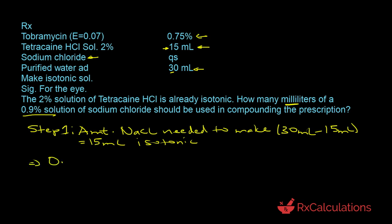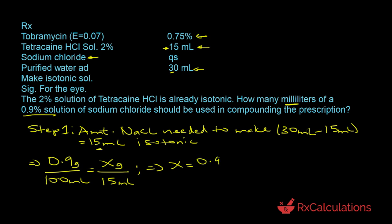Using a proportion based on normal saline — 0.9 grams of sodium chloride per 100 ml — we set this equal to x grams divided by 15 ml, the volume needing adjustment. Solving for x: x equals 0.9 grams times 15 ml divided by 100 ml. The milliliters cancel out, giving x equals 0.135 grams sodium chloride.